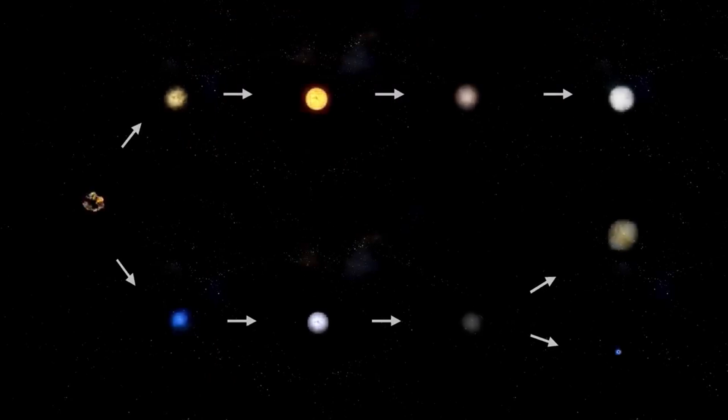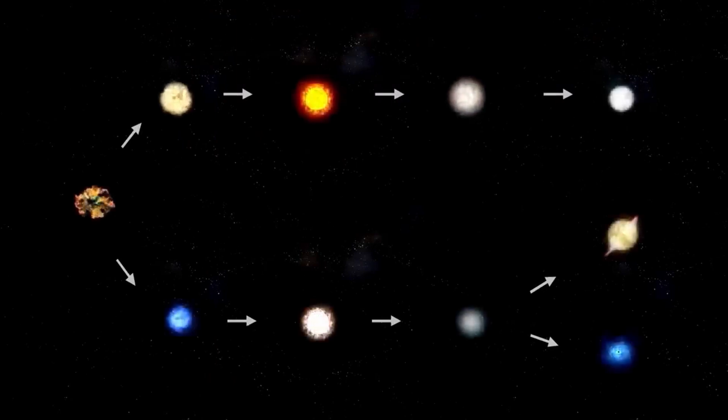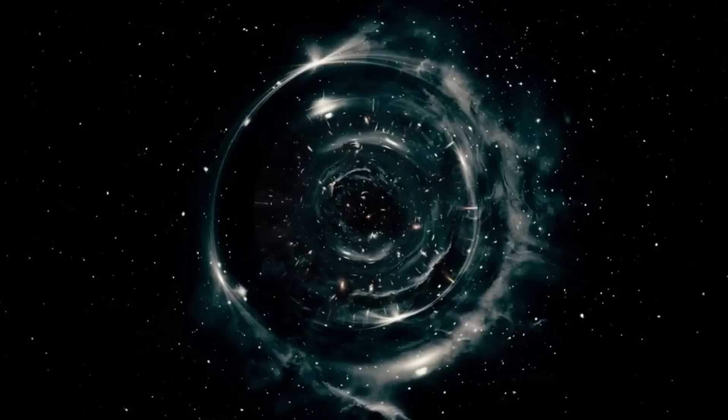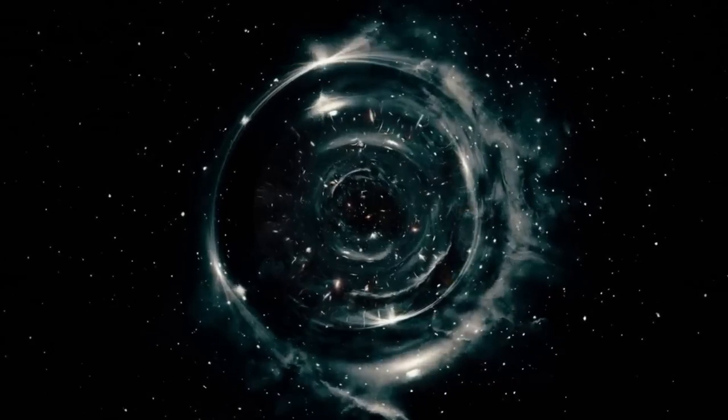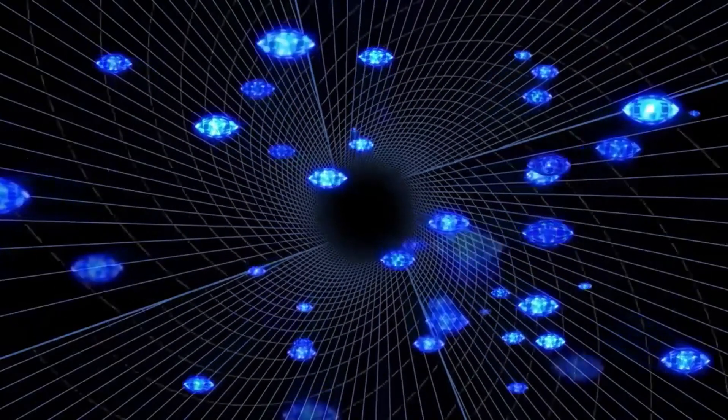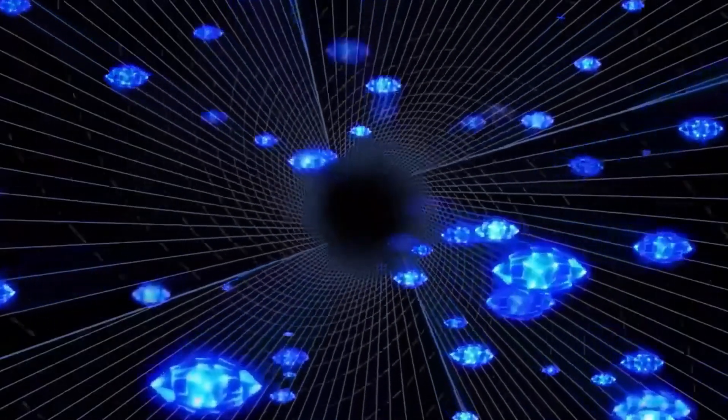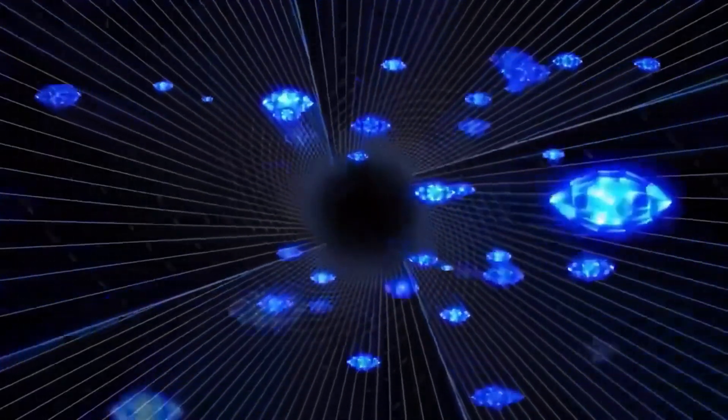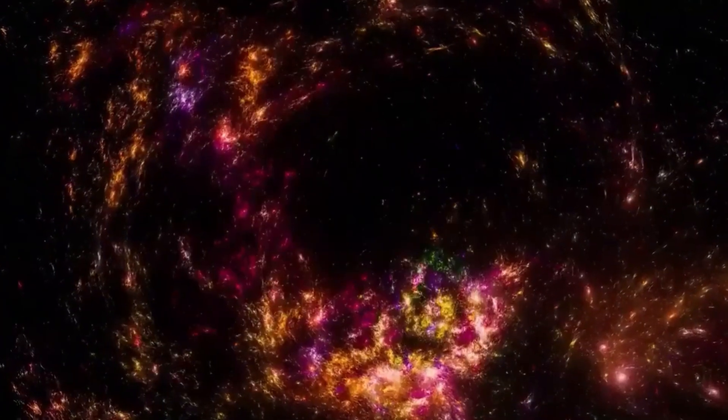This energy will take the form of visible light, gamma rays, and other forms of radiation. The shock wave from the explosion will travel outward, dispersing heavy elements like iron, gold, and uranium into the surrounding interstellar medium. These elements are essential for the formation of new stars, planets, and even life.